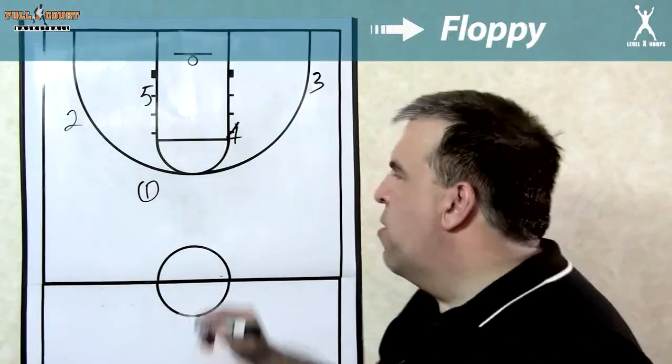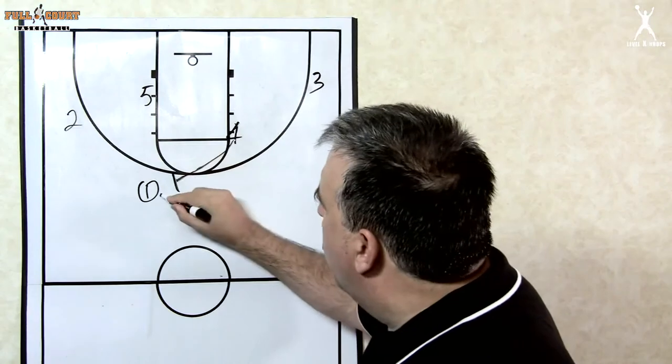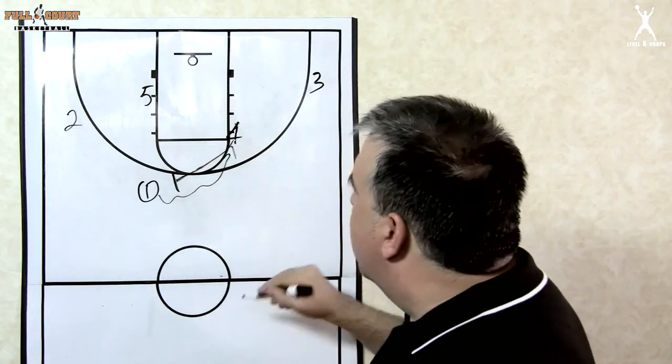Let's continue the play here. One's got the ball. Four is going to sprint over and set the ball screen for one. One's going to come off the screen and look to attack.